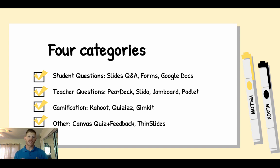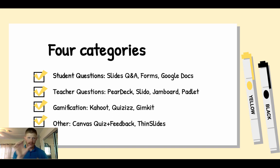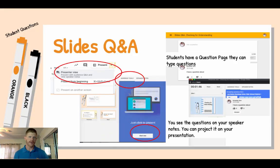The four categories are: first, how do we get students to ask their questions — what tools are available for that; second, how do we ask questions so we can get information from students to teach based off of; third, gamification — how do we use games to boost engagement, make it fun, and collect information to give timely formative feedback; and fourth, an 'other' category that fits across all of them and is also about checking for understanding.